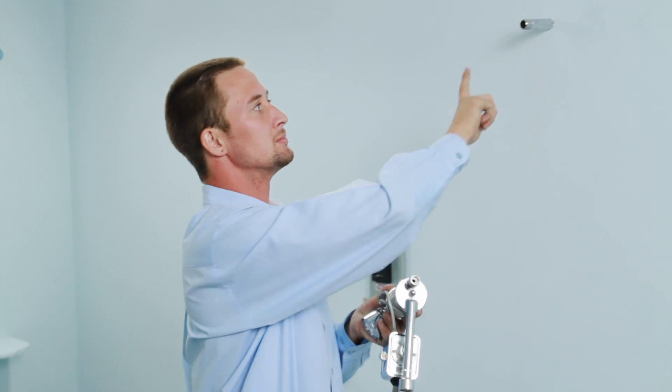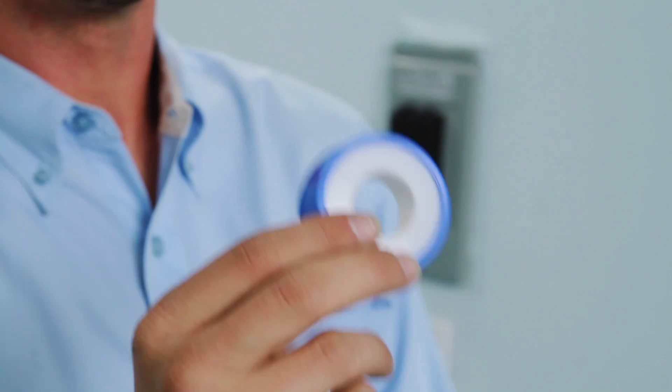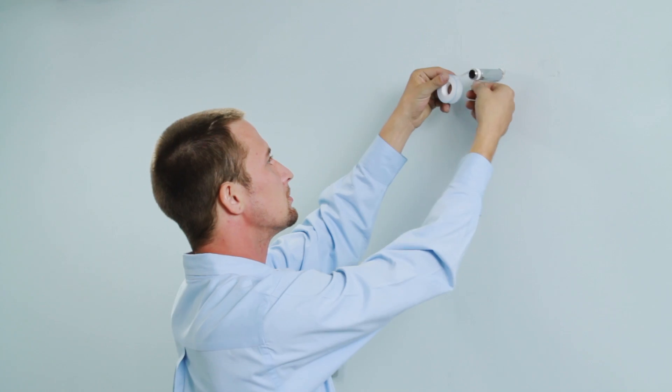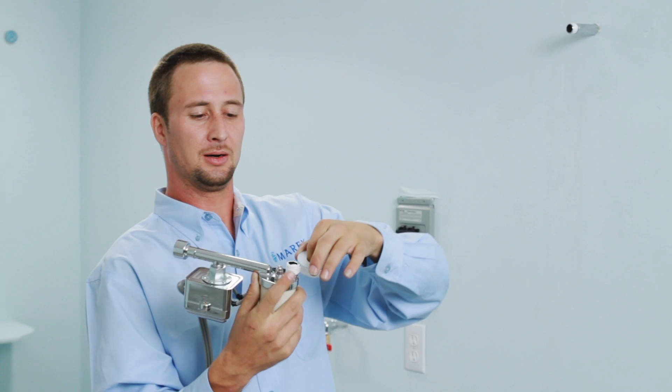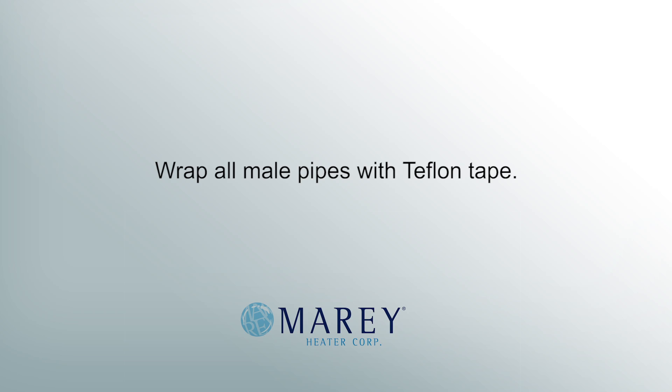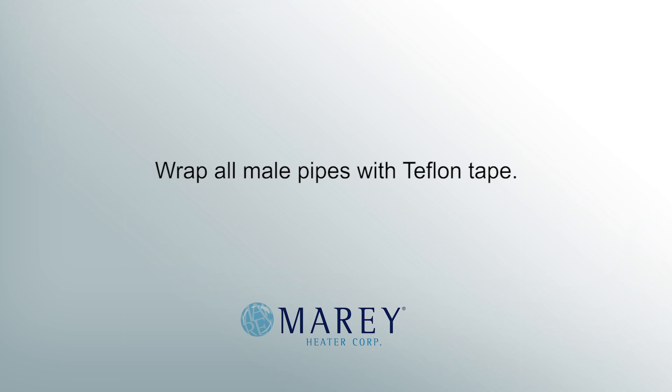To install your heater, first wrap the half-inch male nipple supplying water to the heater and the half-inch male threaded nipple coming out of the heater with white Teflon tape. Wrap all metal pipes with Teflon tape.